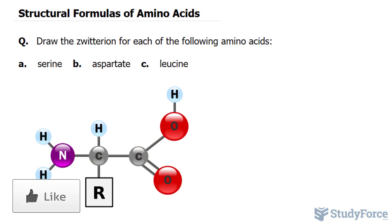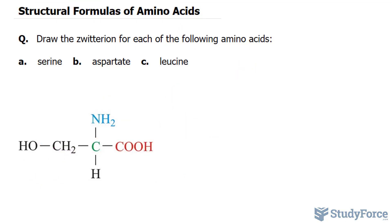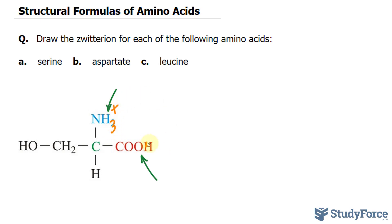Let's begin with the first example, serine. Serine looks like this. This is the amino group, this is the carboxyl group, and that's the R group. In a solution, you should expect the carboxyl group to lose its hydrogen over to the amino part, making it negative and the amino group positive. This leaves the ionic form of the amino acid net neutral. So this should become NH3+, and that should lose its hydrogen and become the carboxylate. That's the answer to question A.